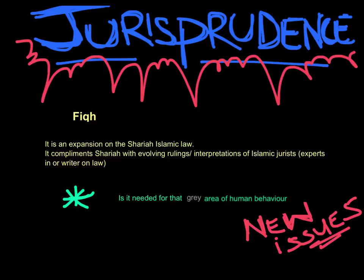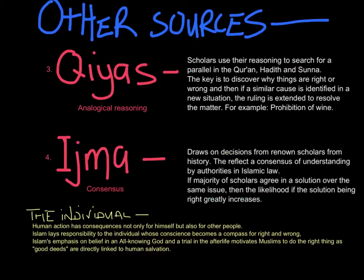The jurisprudence process is necessary because it focuses on that grey area of human behaviour — those areas not strictly identified by the Quran, Hadith, or Sunnah as self-evidently good or evil. It is applied in relation to new issues and bioethical issues such as abortion and euthanasia. As part of this process, new sources become available. The first is Qiyas, or analogical reasoning, where scholars use their reasoning to search for a parallel in the Quran, Hadith, and Sunnah to discover why things are right or wrong. For example, Islam prohibits the drinking of wine; from this, a broad prohibition of alcohol is deduced, with the root cause being the mind-altering nature of alcoholic drinks. Jurists also use their reason — based on custom, public interest, and equity — to come up with a legal deduction, taking into consideration the context and impact of such decisions.